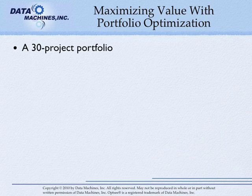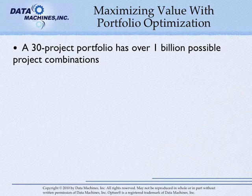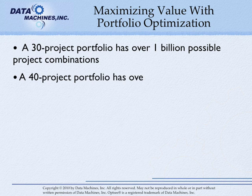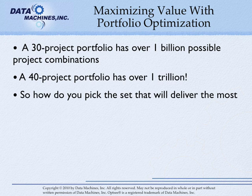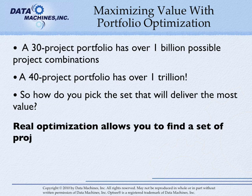In a 30 project portfolio, there are over 1 billion possible project combinations. In a 40 project portfolio, there are over 1 trillion possible combinations. So how do you pick the set that will deliver the most value and not exceed your constraints?